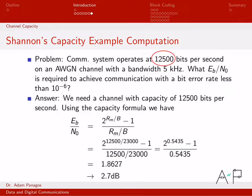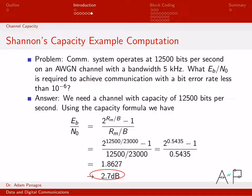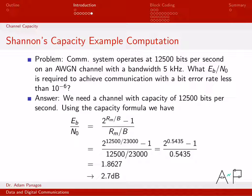I plug into Shannon's capacity formula with data rate 12,500 and bandwidth 5,000. The ratio Rm/B is 2.5, and the denominator term works out to 0.5435. Plugging into the calculator gives Eb/N₀ = 1.8627 as a linear quantity. Converting to dB using 10·log₁₀ gives 2.7 dB. So for these parameters, as long as I have a signal-to-noise ratio of 2.7 dB, I can achieve arbitrarily low bit error rates at this data rate over the 5 kHz bandwidth. If data rate increases I'll need more SNR; if bandwidth increases I can get by with less.